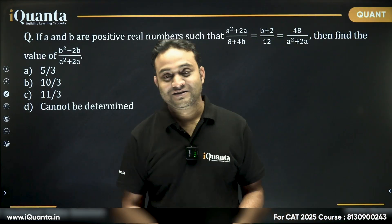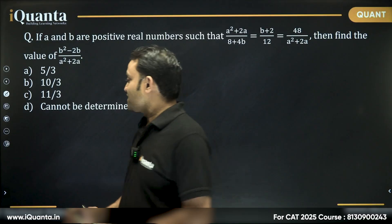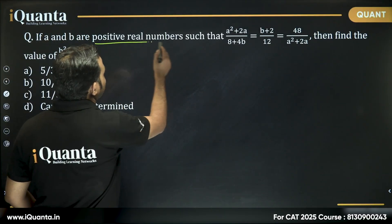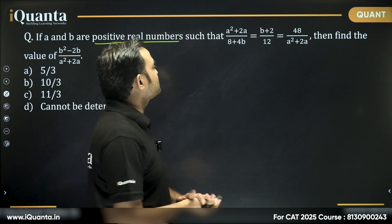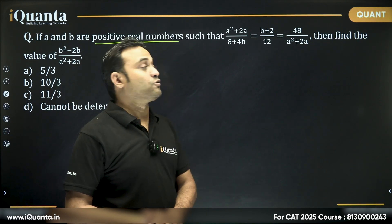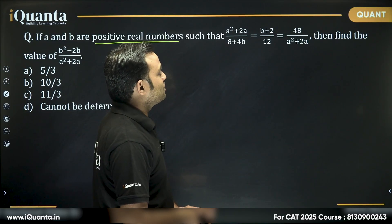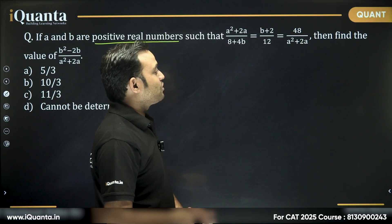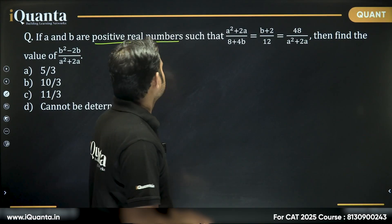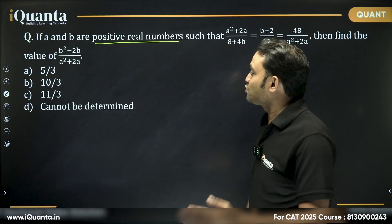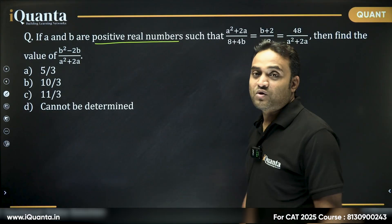Alright, now let us check the solution. Question says, if a and b are positive real numbers such that a² + 2a upon 8 + 4b is equal to b² upon 12 is equal to 48 upon a² + 2a, then find the value of b² - 2b upon a² + 2a.